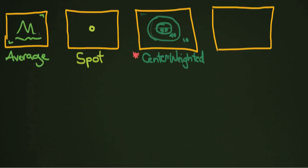The last one is multi-zone, because that's the non-corporate way of saying it. Every company has its own way of creating multiple metering systems, these sort of advanced metering systems that are coming out today. They're often a combination of a center-weighted and an average.